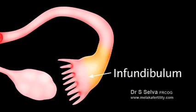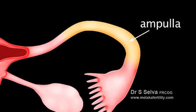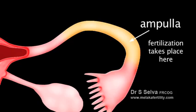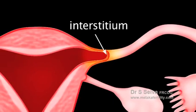The infundibulum is the funnel-like structure of the tube which is margined by the fimbriae. The ampulla is the longest portion of the tube with a thin wall, almost muscle-free, and wide lumen — it is usually the portion where fertilization takes place. The isthmus is the almost straight portion of the tube with a relatively thick muscular wall and the narrowest lumen. The interstitium is the portion of the tube closest to the uterus, sometimes known as the uterine portion of the tube, as it lies within the uterus.